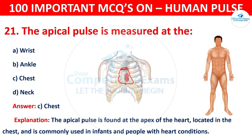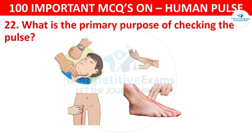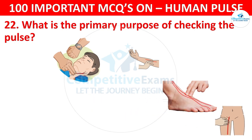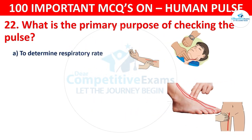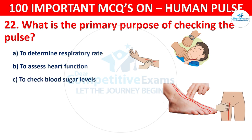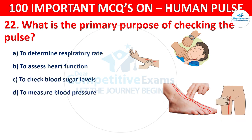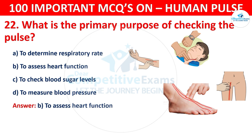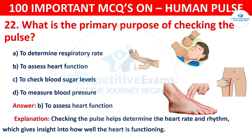Question number 22: What is the primary purpose of checking the pulse? Your options are: To determine respiratory rate, To assess heart function, To check blood sugar levels, or To measure blood pressure. The correct answer is B, that is to assess heart function. Checking the pulse helps to determine the heart rate and rhythm, which gives insight into how well the heart is functioning.